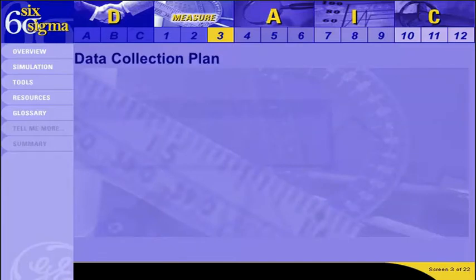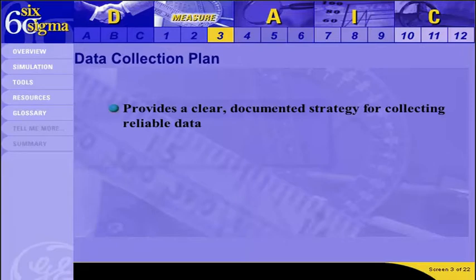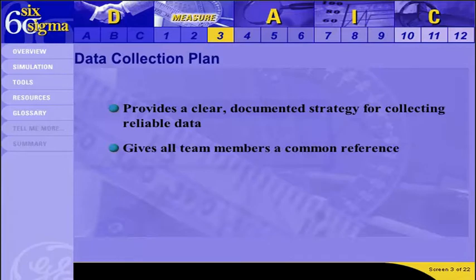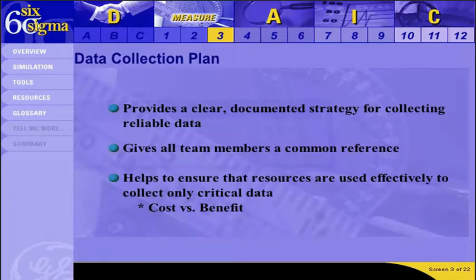A data collection plan is the first step towards gathering accurate data. Its intent is to provide a clear, documented strategy for collecting reliable data. It gives all team members involved in the measurement process a common reference, and it also helps to ensure that resources are used effectively to collect only data that is critical to the project. In some cases, new data collection might not be the only option — look for any historical data that is available and consider the benefits of new data versus the costs of the collection process.